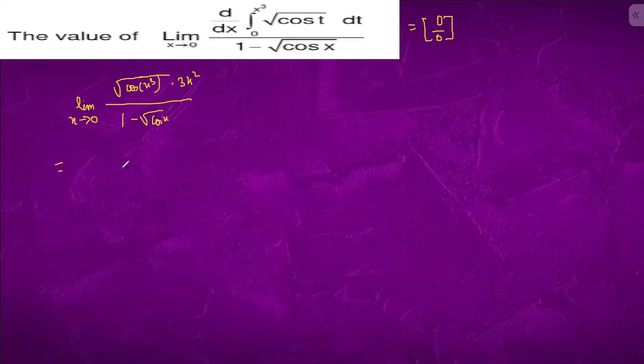So this will come out to be 1. It will be like this: limit x tending to 0, 3x² / (1 - √cos x). This is 0 by 0, so we will apply L'Hôpital's rule.